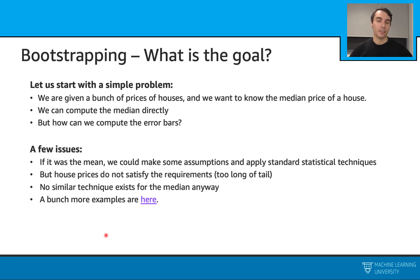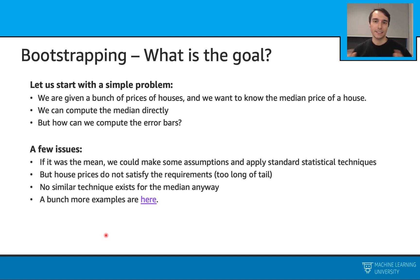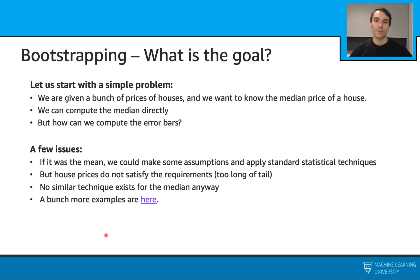Let's assume we are looking at house prices in a certain area, and we want to know the median price of a house in that area. We can compute the mean directly from our samples, but in this case we don't know what our error range is. House prices usually do not satisfy the normal distribution assumption — they usually have a tail. And for the median, there are no easy ways to calculate those population parameters. With these problems, we usually refer to some alternative methods, and bootstrap is one of them.